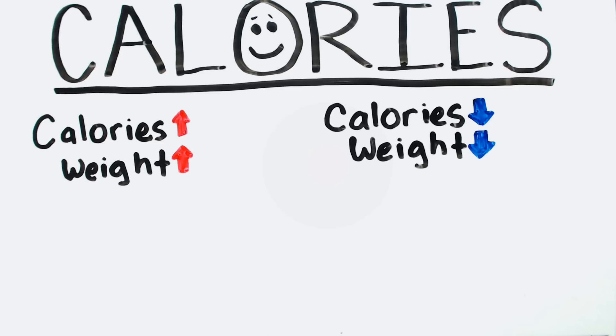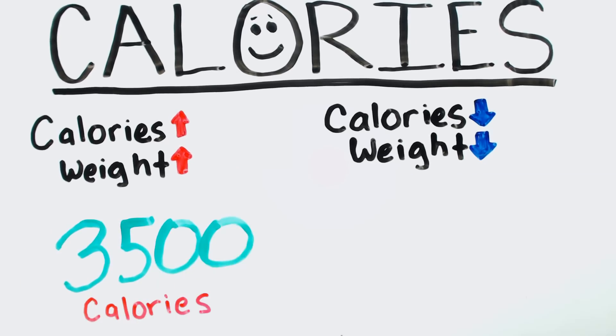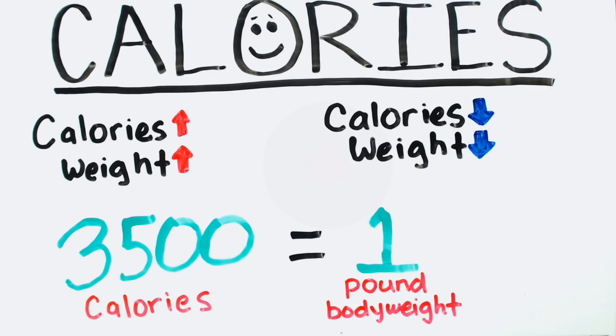For one, calories can be used as a direct measurement of how much food we take in and how much weight we gain or lose. Every 3500 calories is equal to one pound of body weight.